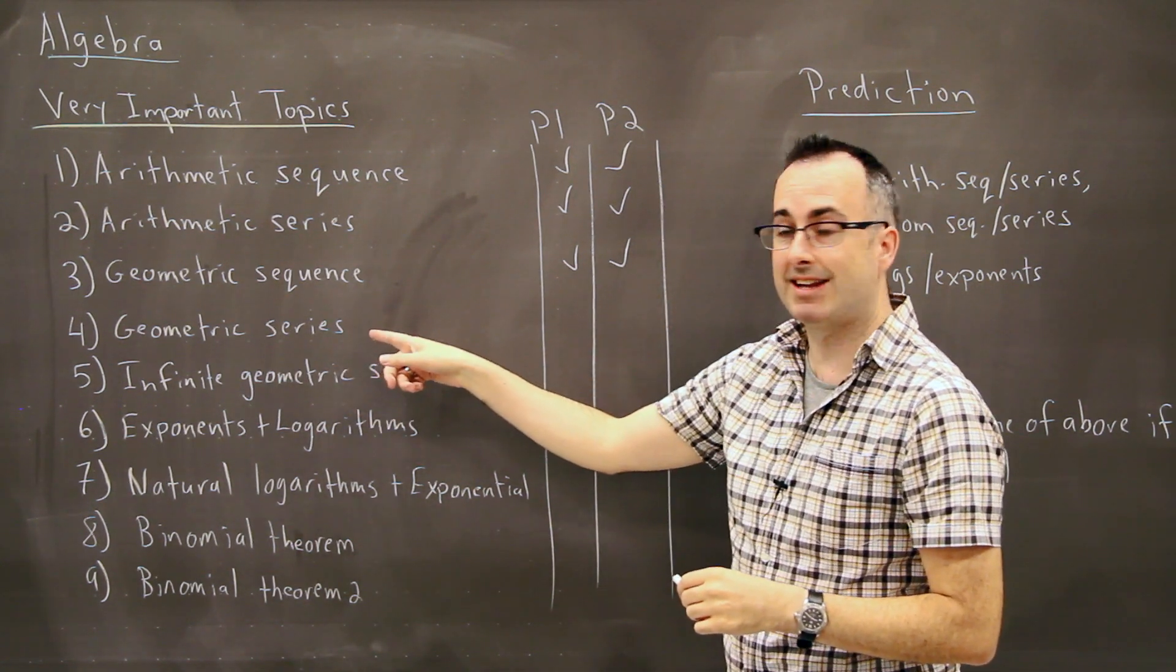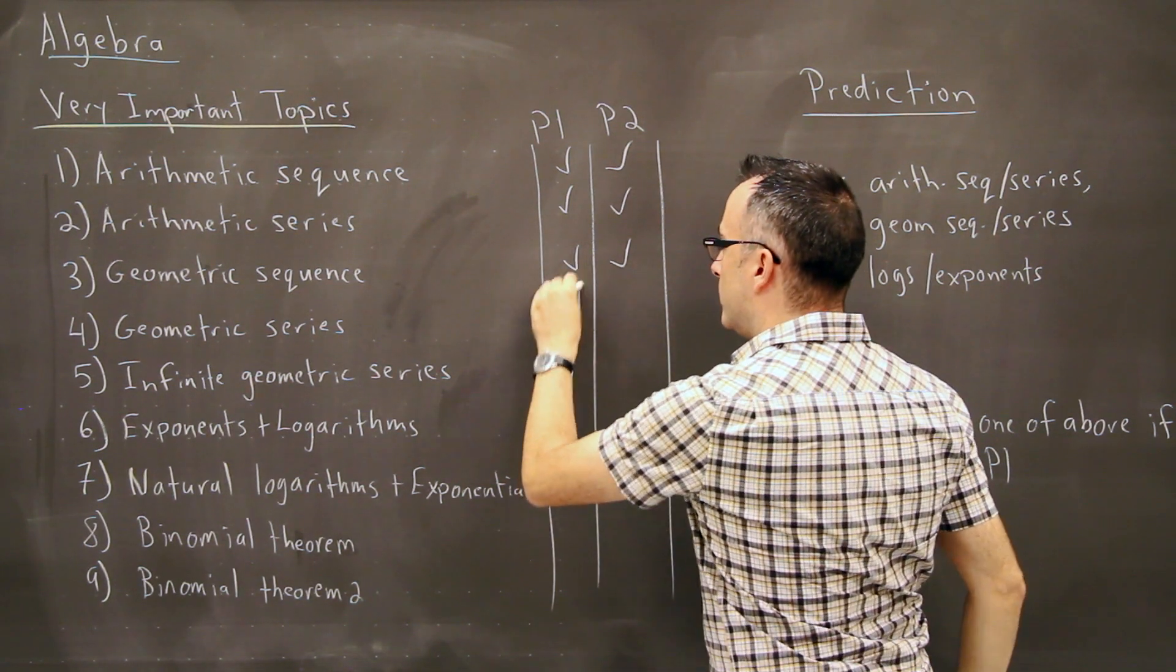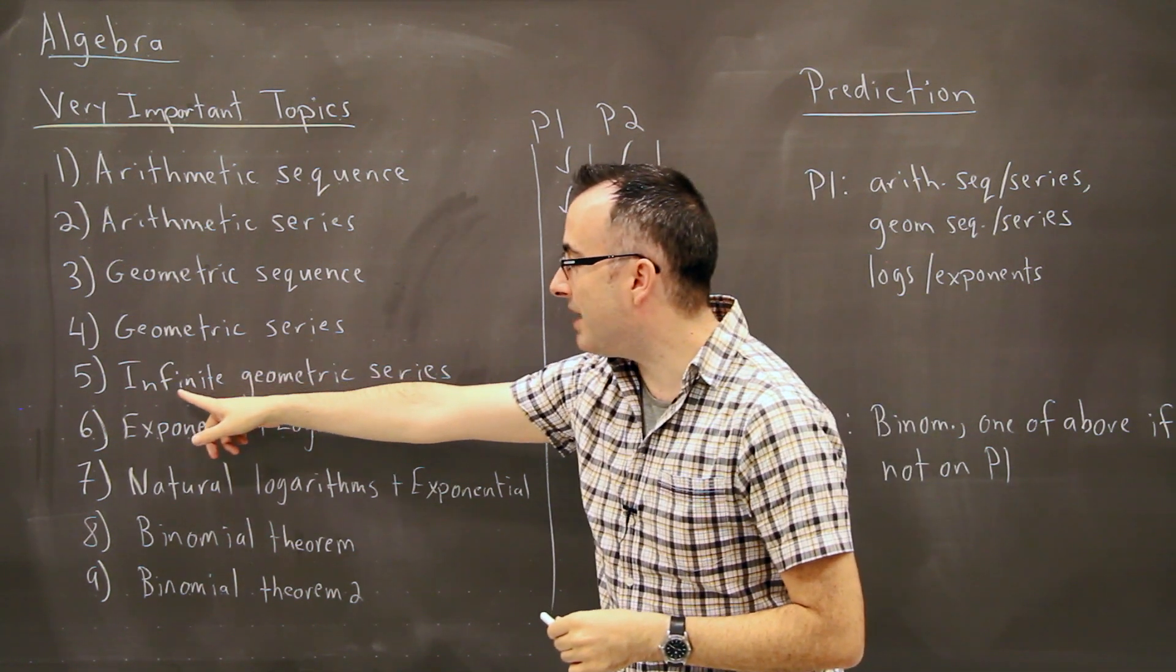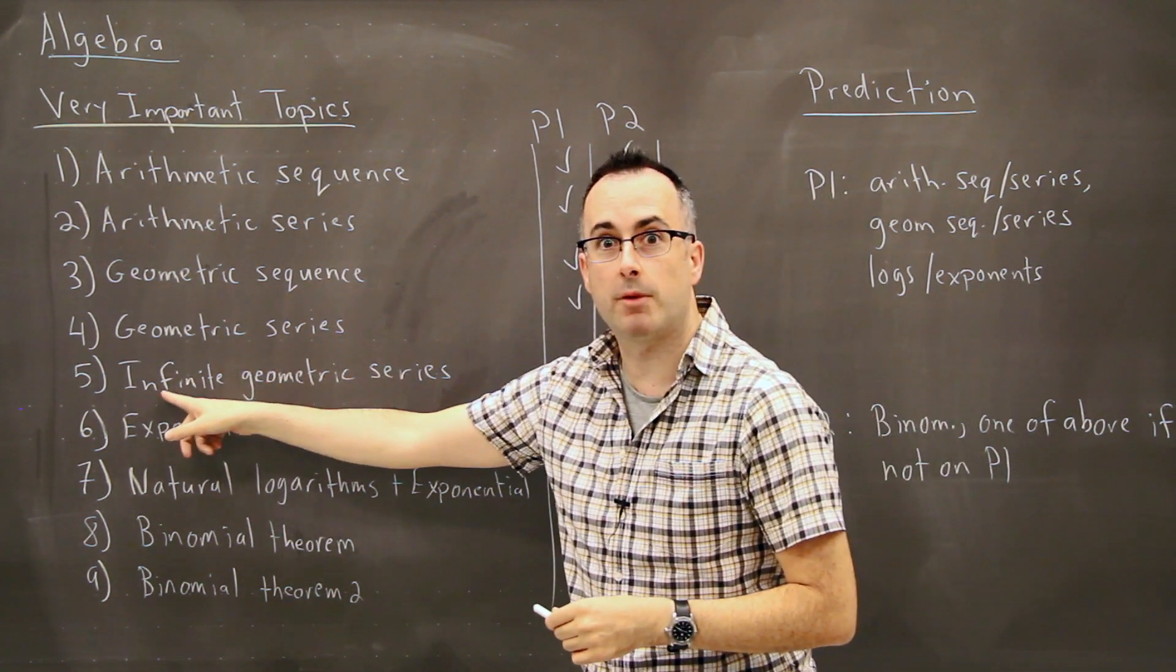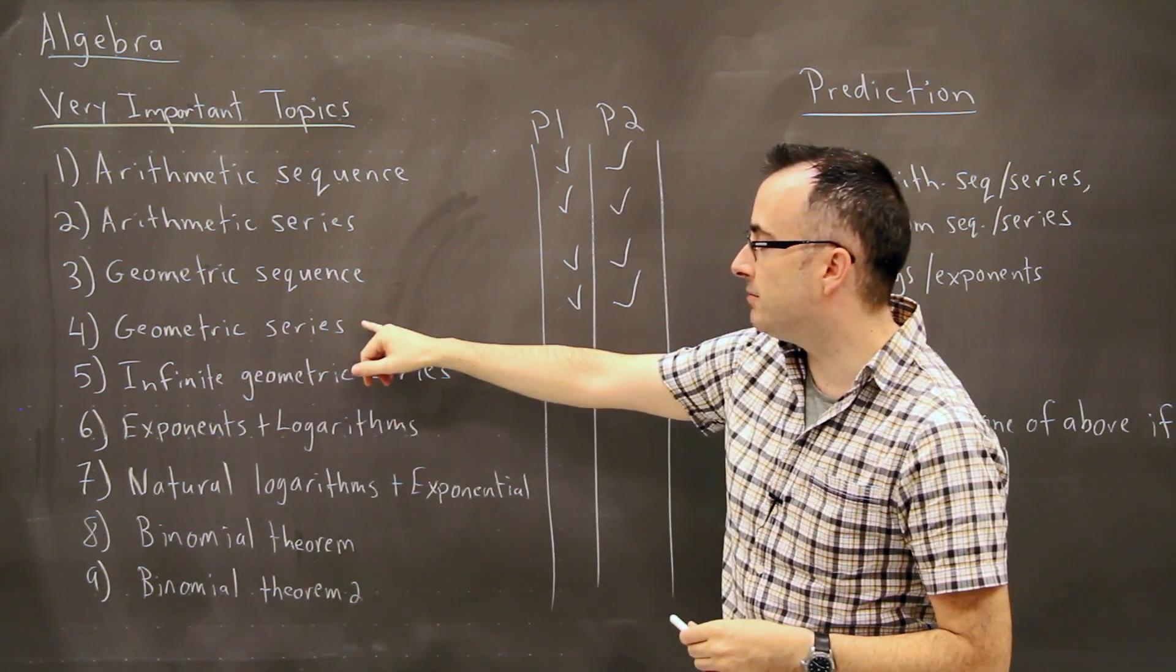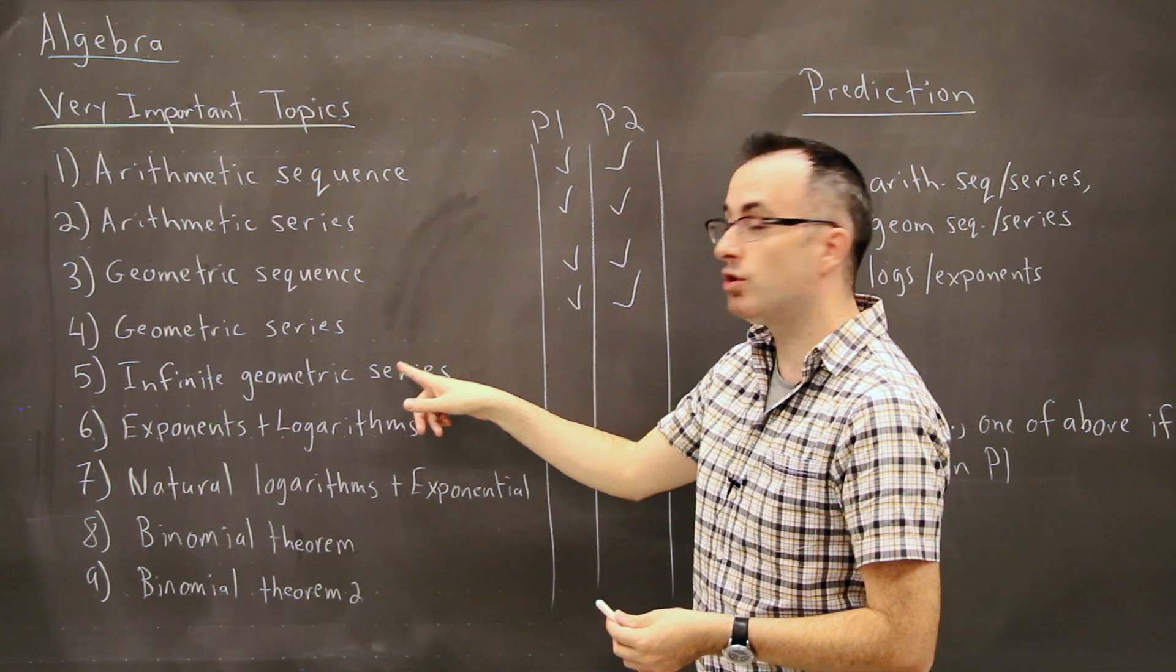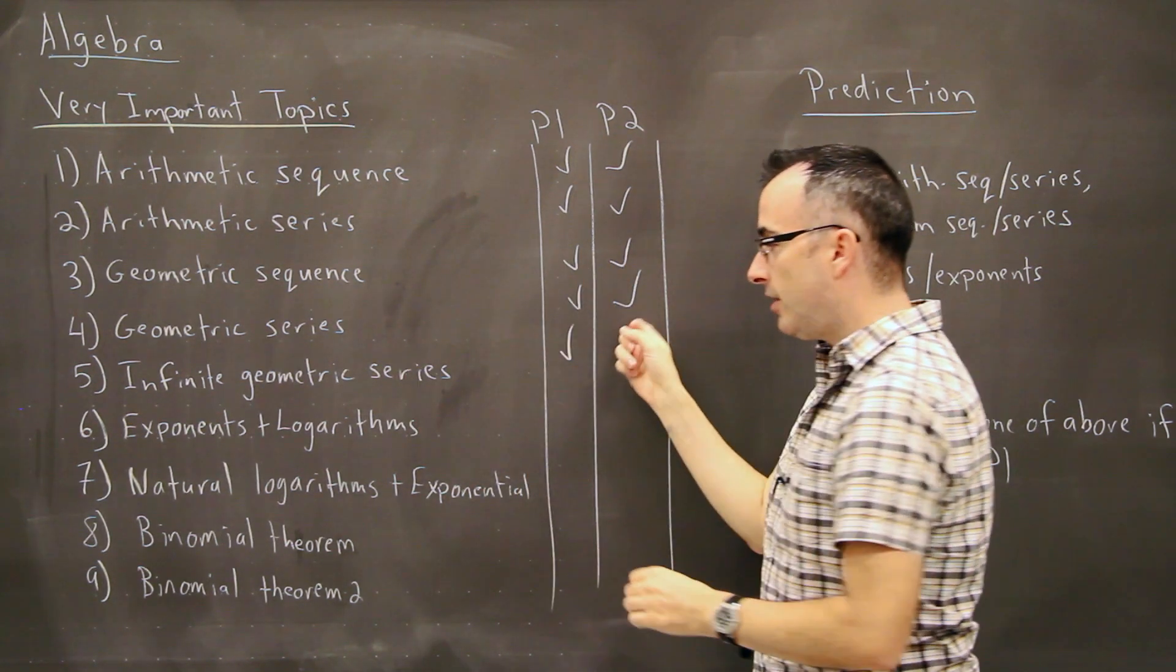Geometric Series, again, is just adding up all the terms in a geometric sequence. Those also show up on Paper 1 and 2. You might wonder, okay, well, what's going on here? That's because here, when we have Infinite Geometric Series, this is when you add up all the terms to infinity in a geometric series. It has to converge. If you do that, these ones show up most often on Paper 1 only. You don't find them very often on Paper 2.